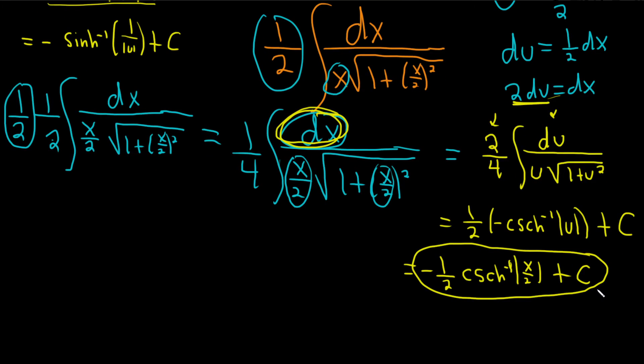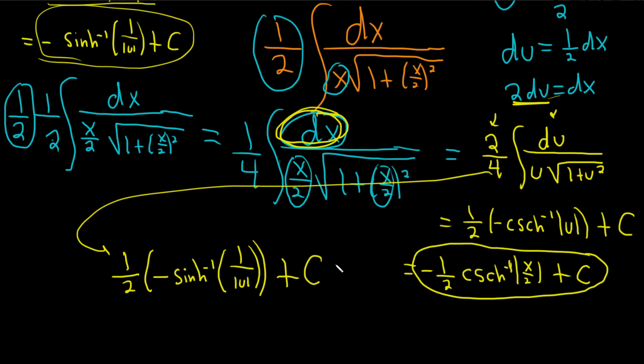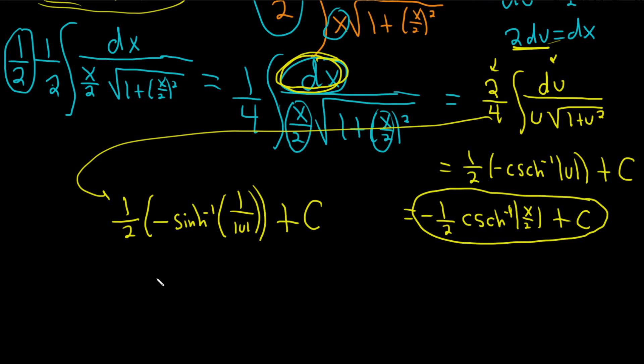Another acceptable answer would be if you use this formula here. If you use that one, you would get 1 half negative inverse of the hyperbolic sinh of 1 over the absolute value of u. Plus c. And then we know that u is x over 2. So this is negative 1 half inverse of the hyperbolic sine. And so it would be 1 over the absolute value of x over 2 plus c.